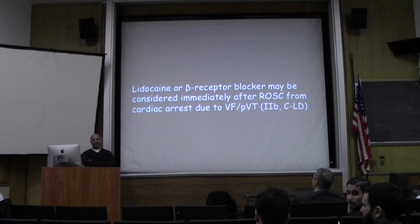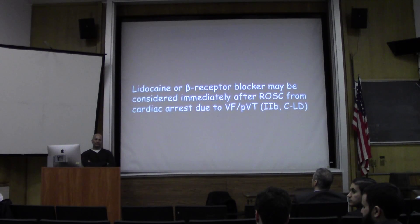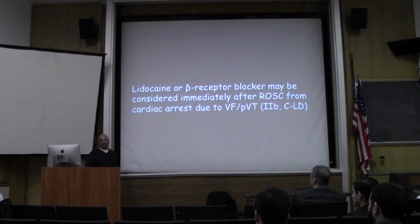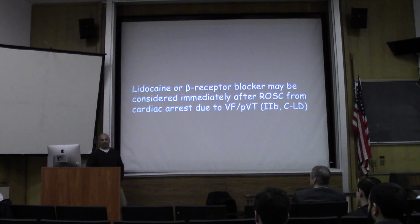A question: with giving a beta blocker after several rounds of epi, it could cause unopposed alpha and cause vasoconstriction globally. Is there any concern about that? So, presumably, you haven't had to give too much epinephrine. Remember, you're giving it IV, so you're not putting them on an epinephrine drip. You'd expect that some of the effects from the epinephrine will have sort of dissipated by the time you put them on.